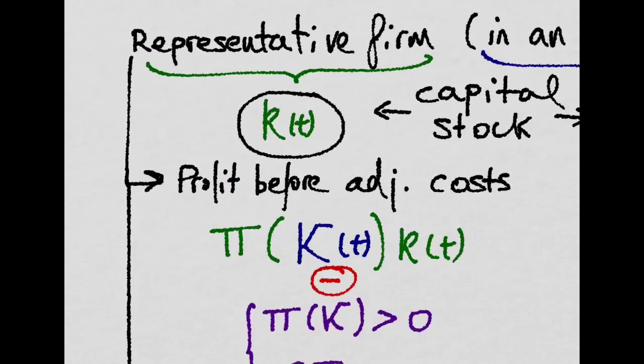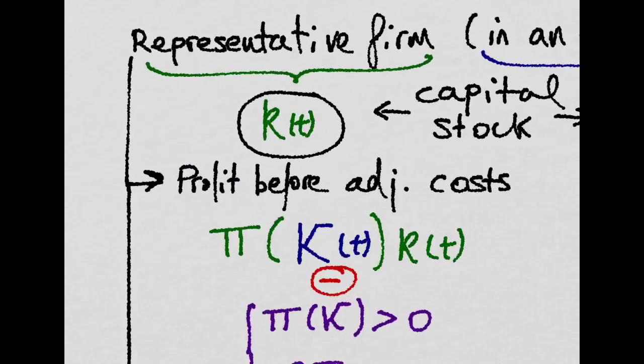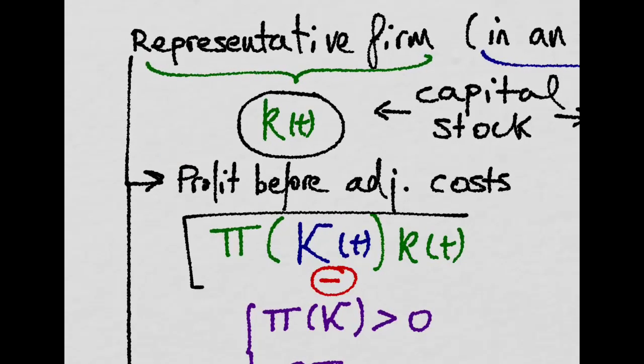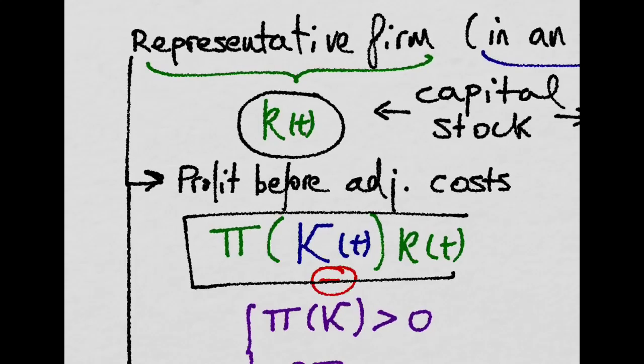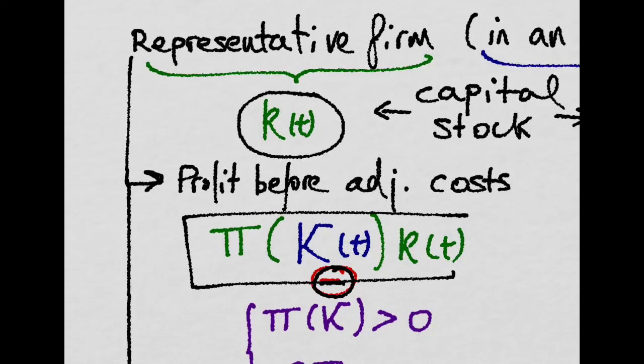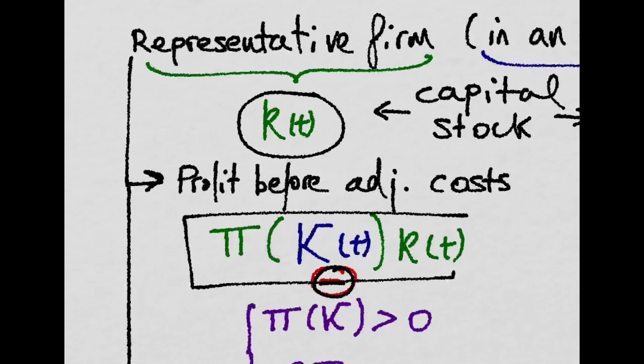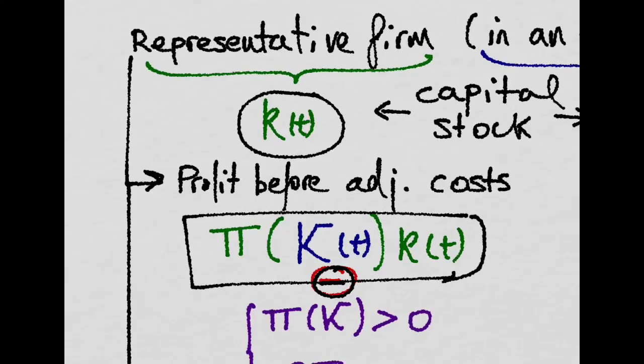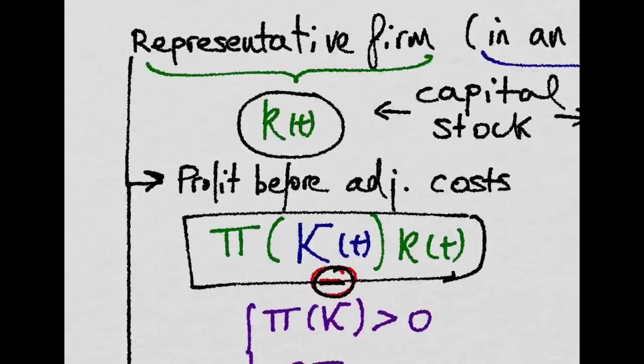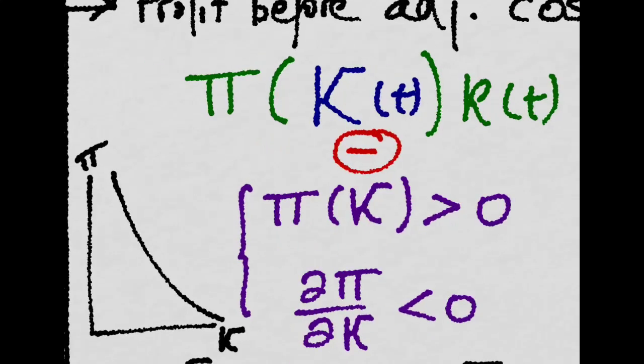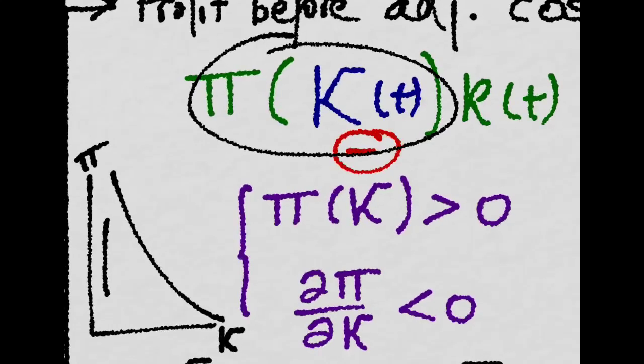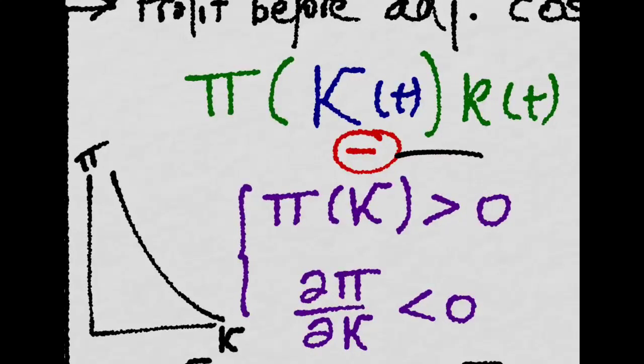At time t, the firm has a profit before investment that is equal to this function right here, which depends negatively on the existing capital stock of the whole economy, and it is proportional to the firm's capital stock. We are assuming that this profit function is always positive, and its slope always negative.